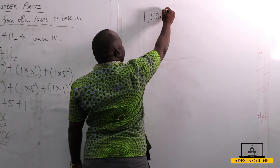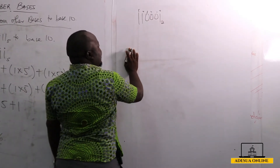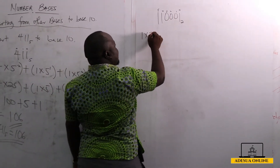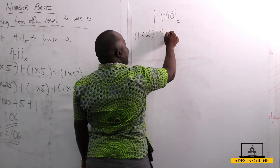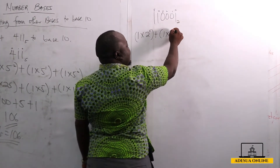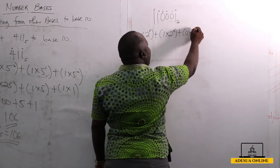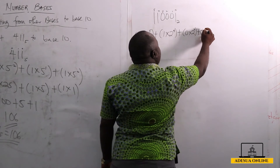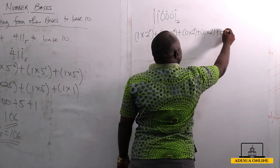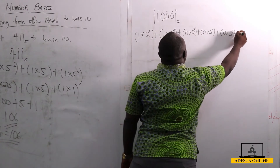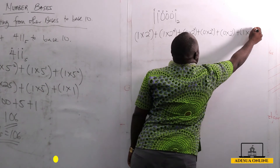I label the digits with positional indices 0, 1, 2, 3, 4, 5 from right to left. So this gives me: 1 times 2 raised to the power 5, plus 1 times 2 raised to the power 4, plus 0 times 2 raised to the power 3, plus 0 times 2 raised to the power 2, plus 0 times 2 raised to the power 1, plus 1 times 2 raised to the power 0.